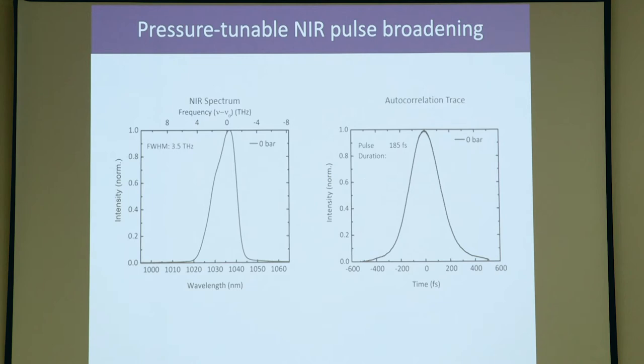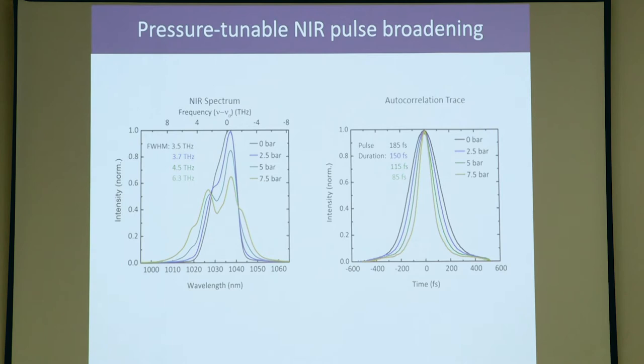But now if I start to increase the pressure of the argon gas inside the fiber, I see the spectrum broadening. I'm going to stop here at 10 bars where we have a broadening up to 8.7 terahertz. The pulses are Fourier transform limited, so we were also able to decrease the time duration of these pulses to 65 femtoseconds. Now let's take these pulses and send them into our terahertz scheme.